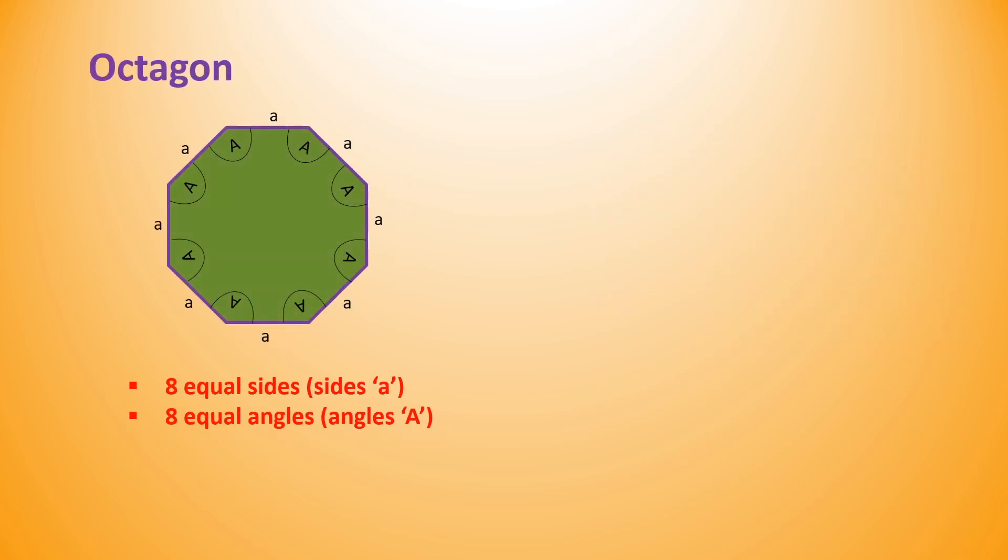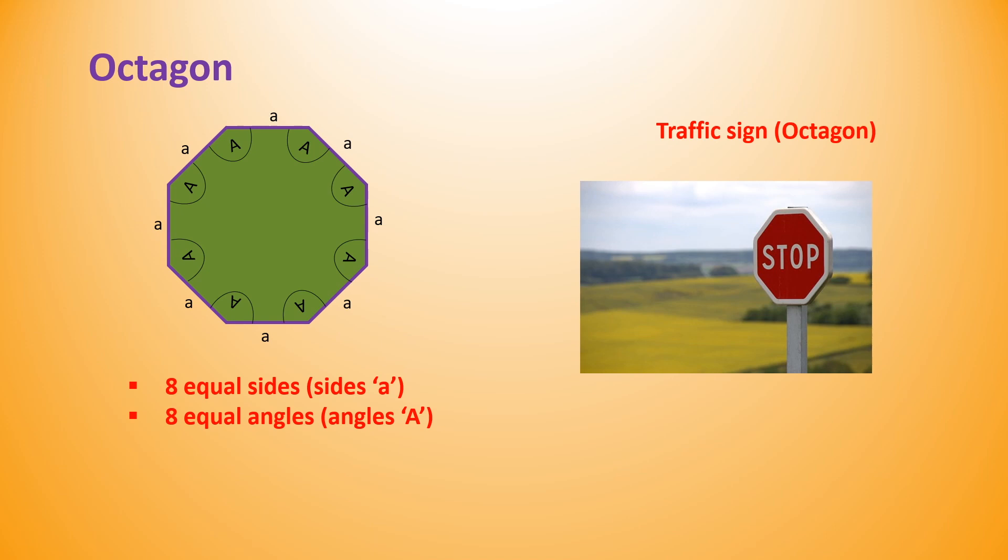Octagon is another 2D shape which is less common. It has eight equal sides as well as eight equal angles. In some traffic signs we can see this octagon shape.